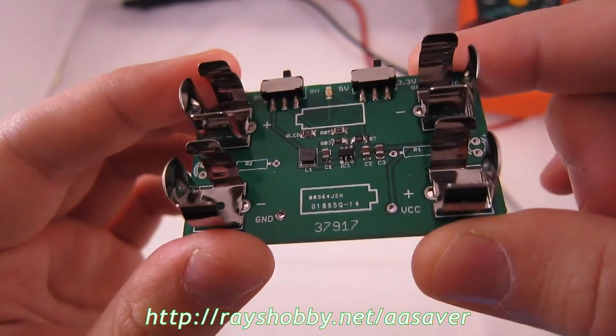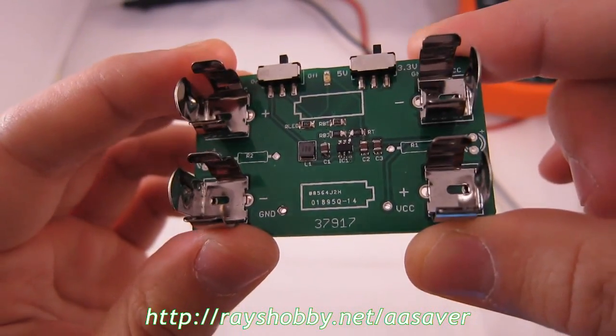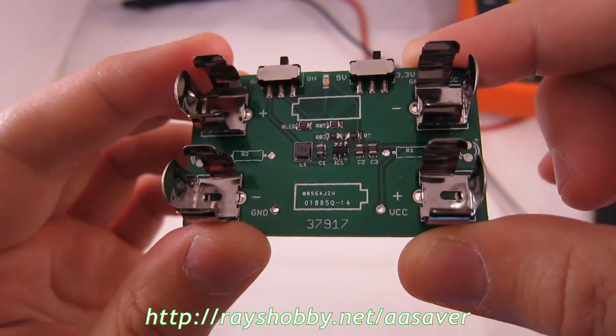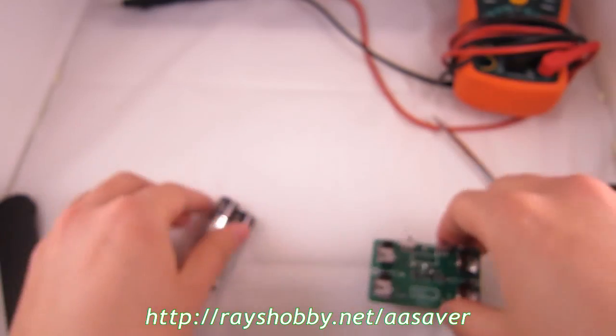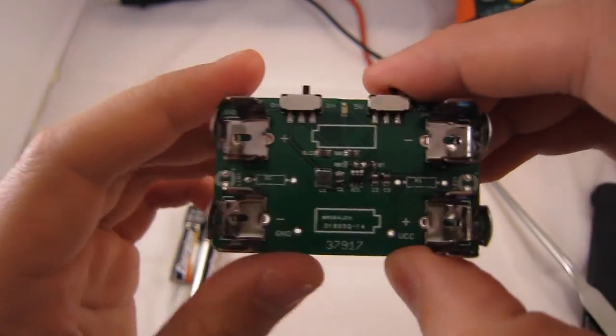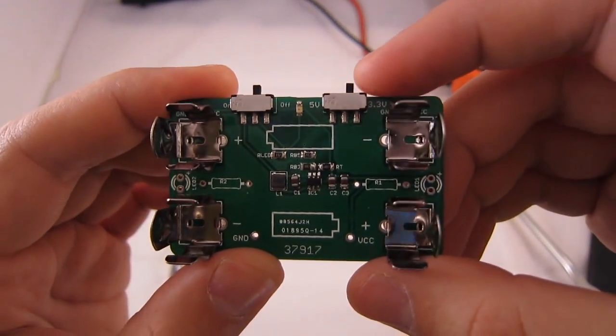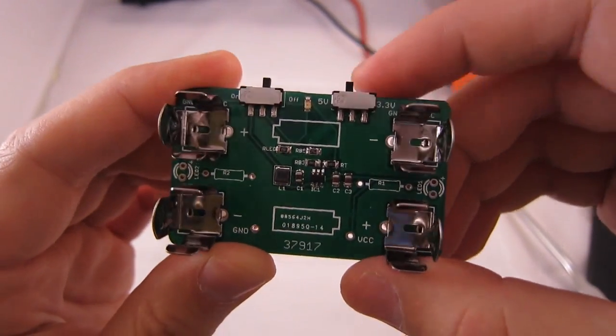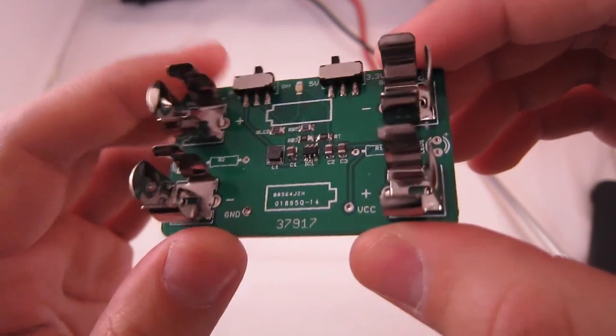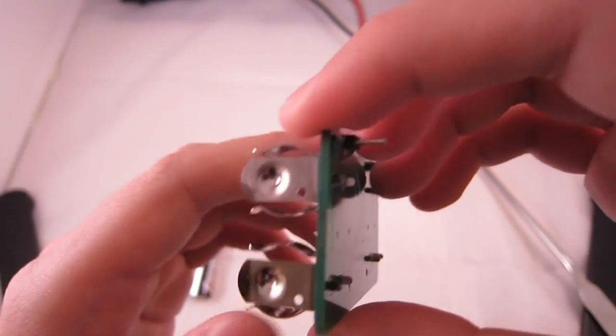OK, so what I am showing here is the AA Saver kit. Now simply speaking, the AA Saver is a voltage booster that can convert the output from two AA batteries to a regulated 3.3V or 5V by using this switch so that you can use it directly as an LED flashlight or you can use it as a breadboard power supply.